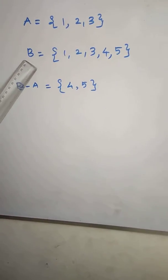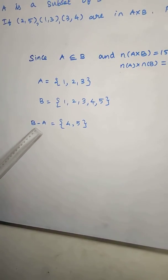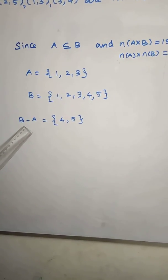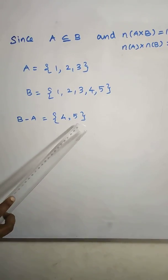For set A and set B, now we identify that B minus A is the elements in B not in A. So 4 and 5 are not in A. Therefore, B minus A equals {4, 5}.